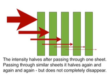If we find the thickness of the material that halves the amount of radiation passing through, and then allow the radiation to pass through the same thickness again and again, the intensity will halve each time but it will never completely disappear.